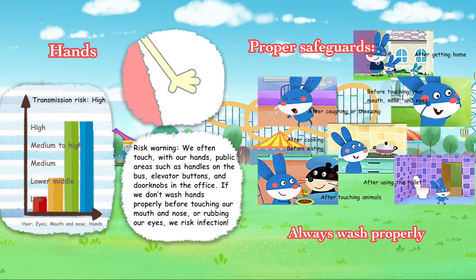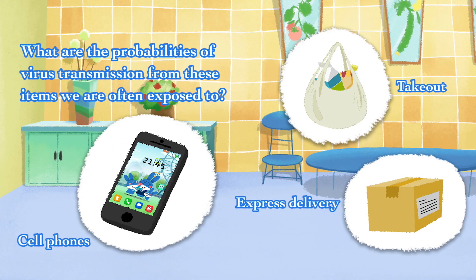Hands — Risk Warning: We often touch public areas with our hands, such as handles on the bus, elevator buttons, and doorknobs. If we don't wash our hands properly before touching our mouth, nose, or eyes, we risk infection. Proper safeguard: always wash hands properly — after getting home, after coughing or sneezing, after cooking, before eating, after using the toilet, and after touching animals.